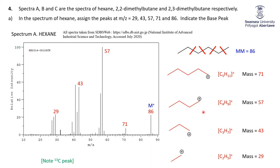One last point to notice is that all of these are based upon all of the carbons being carbon-12. One percent of carbons are carbon-13. So when you have a big high peak, you can sometimes see the C13 peak, where one of the carbons in there is a C13, at one division higher. So instead of 86, it'd be 87. Instead of 57, it would be 58. Instead of 43, it'd be 44. And you can kind of see the one at 30 and the one at 72.